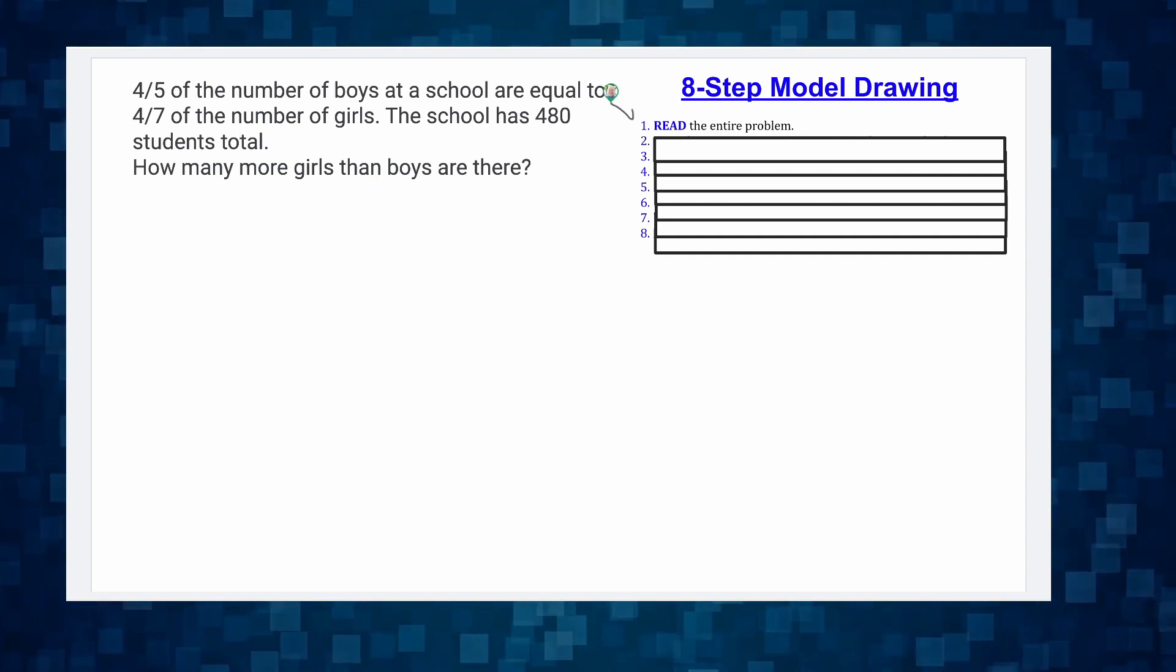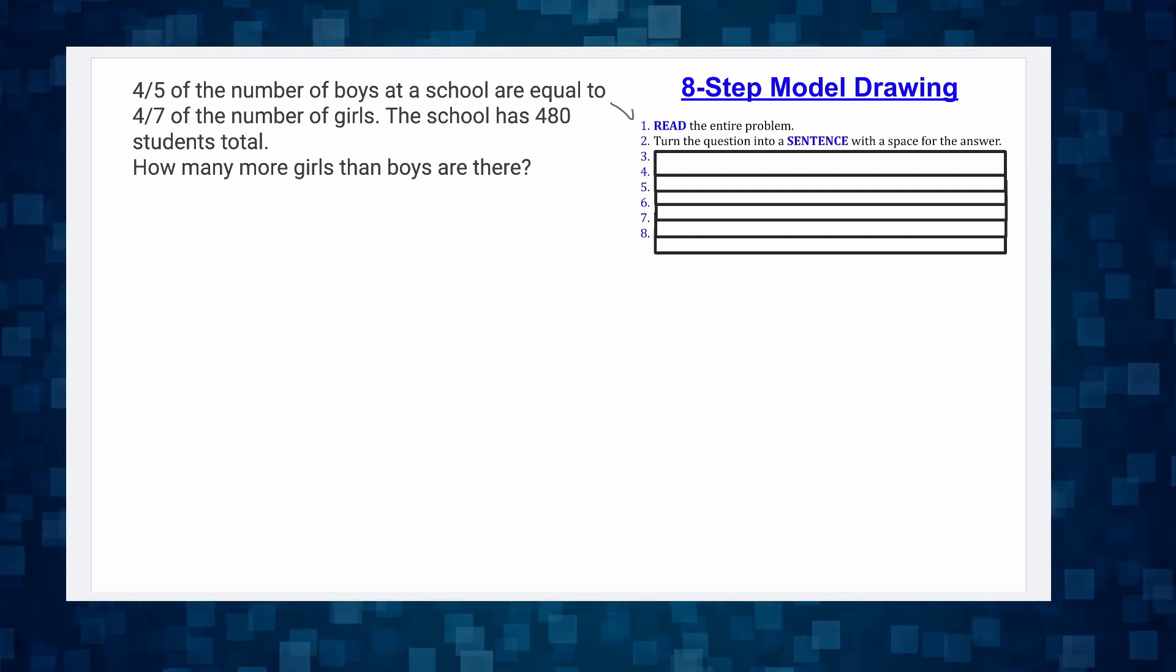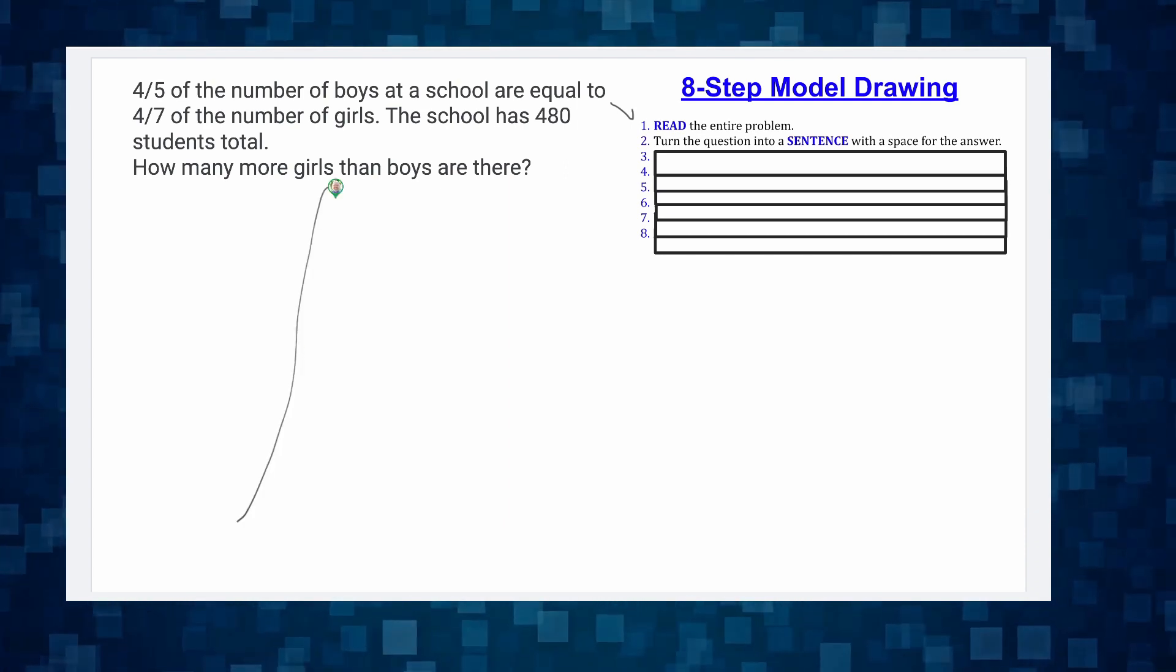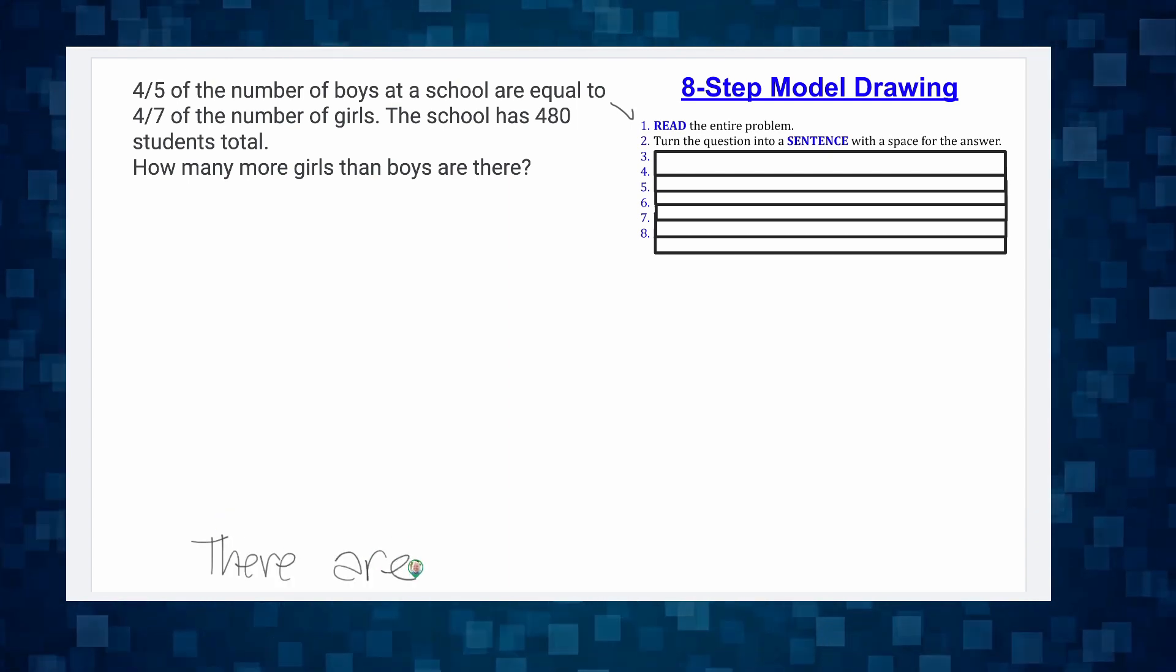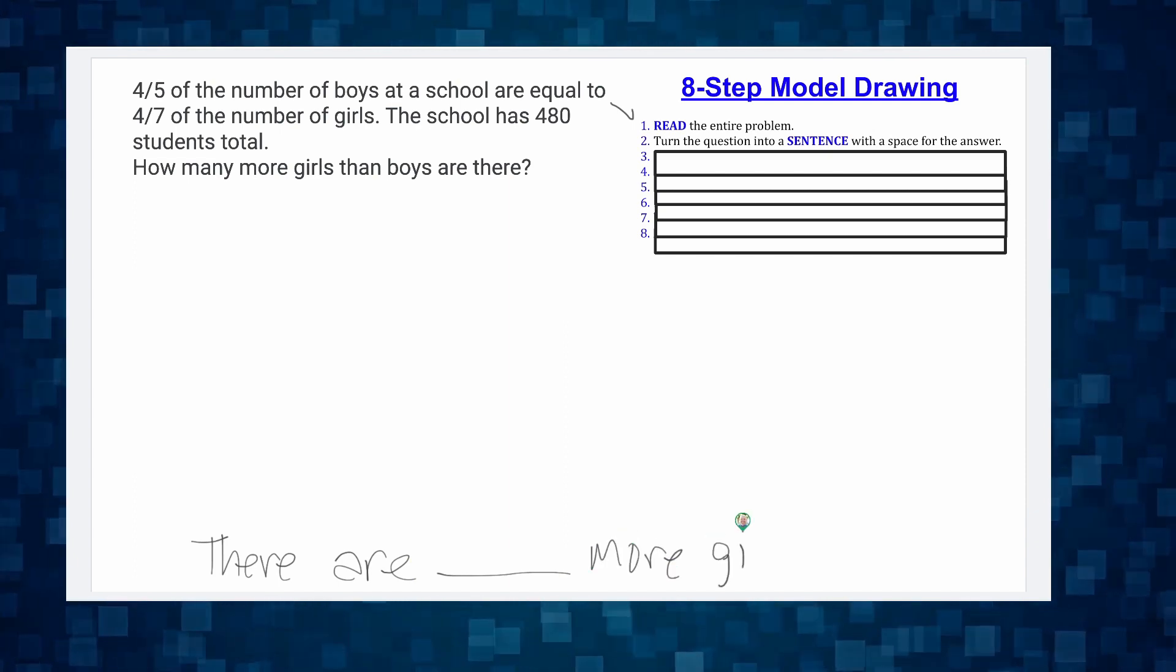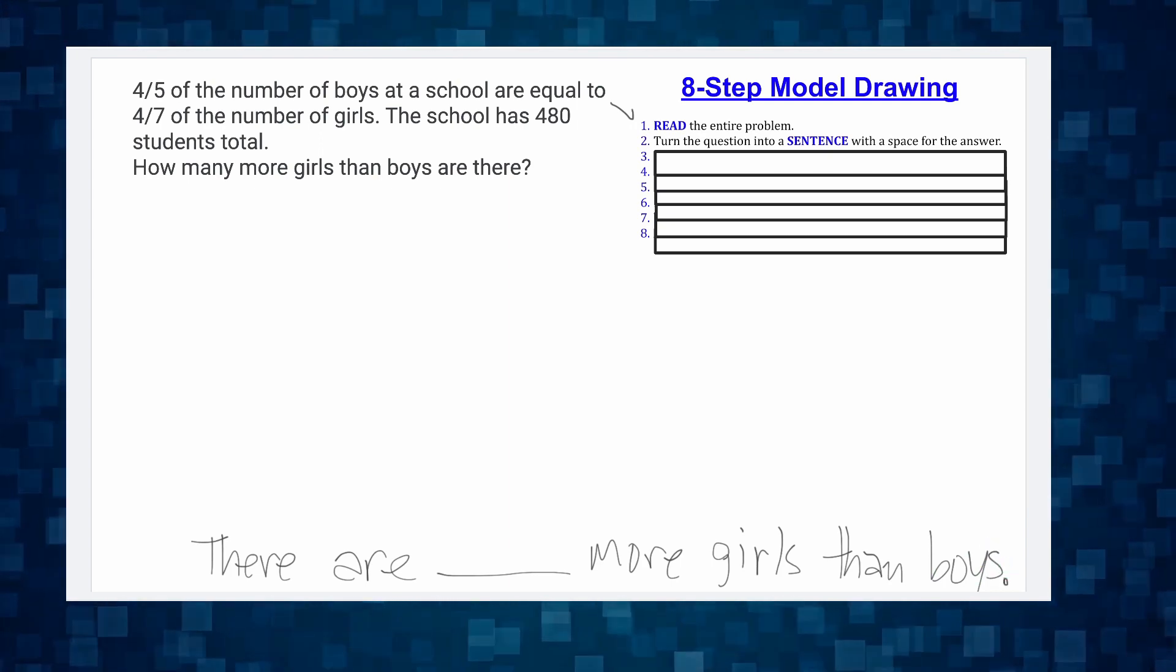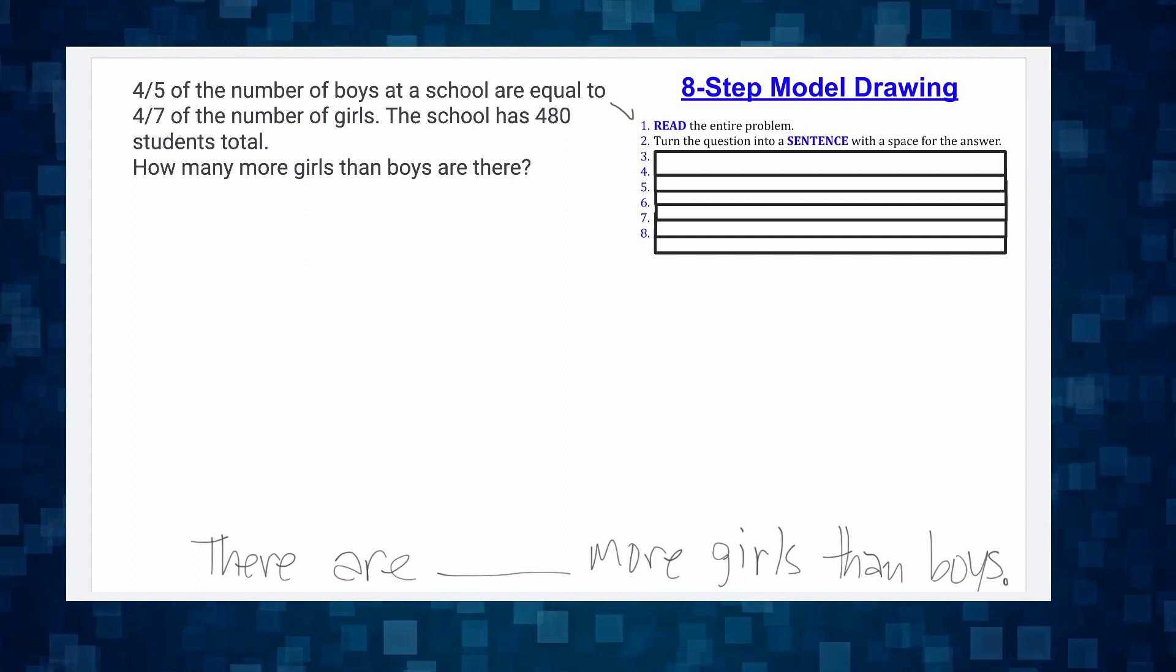Now it's time for us to do step two. Step two says, turn the question into a sentence with a space where the answer goes. So, the question, how many more girls than boys? So what we might write is, there are blank more girls than boys. I always put it at the bottom. You can put it anywhere you want. There's no real rule about where you write that sentence. But the rule is, you definitely need to write that sentence. That's step two.